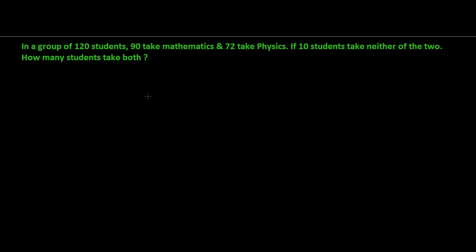Let's have another set theory related word problem. The question says: in a group of 120 students, 90 take mathematics, 72 take physics, and if 10 students take neither of the two subjects, then how many students take both subjects?